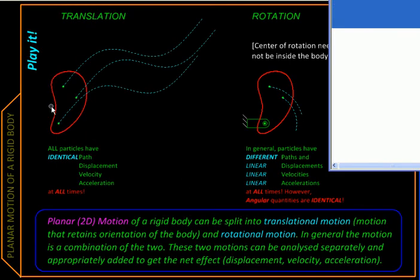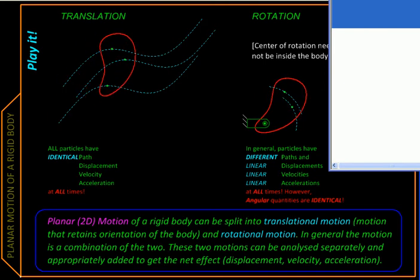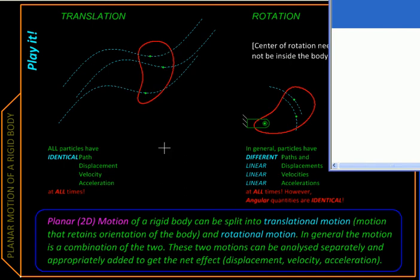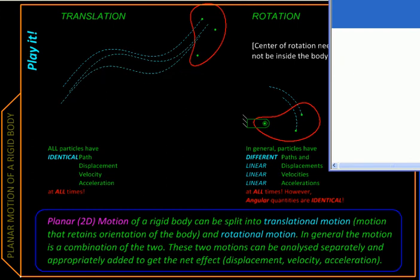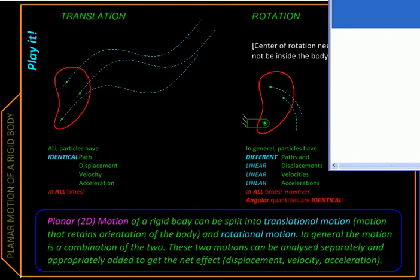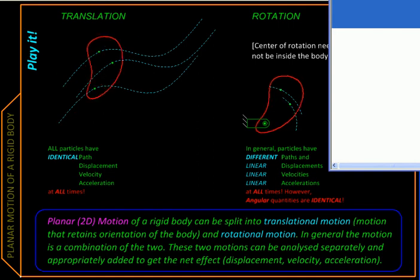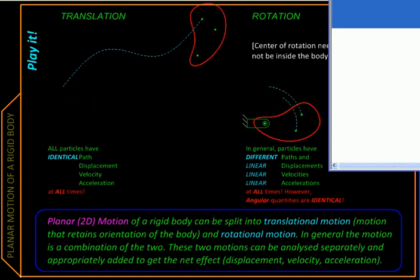So here we have an arbitrary body, and we have taken three arbitrary points in it. And let us set this into translation. And we are going to observe the path followed by these three points. So we are just tracing the paths here. And at the end of that, we are going to collect those paths and we are going to superpose them. And you will see that these paths exactly fit onto each other. So that is the hallmark of translation.